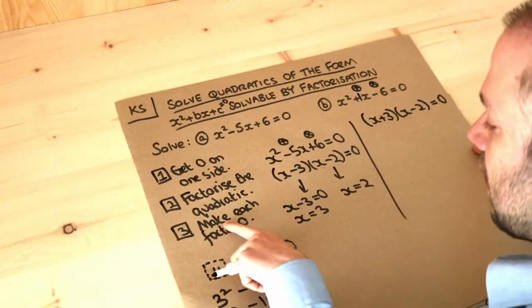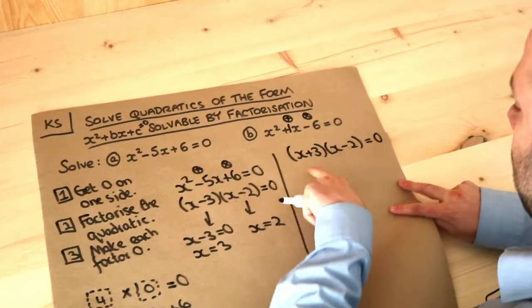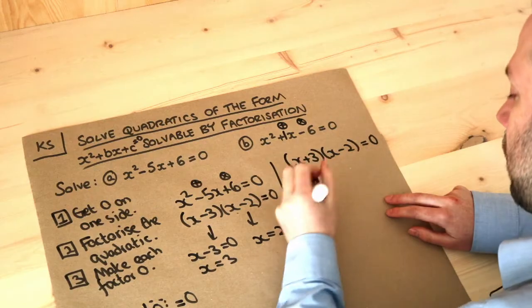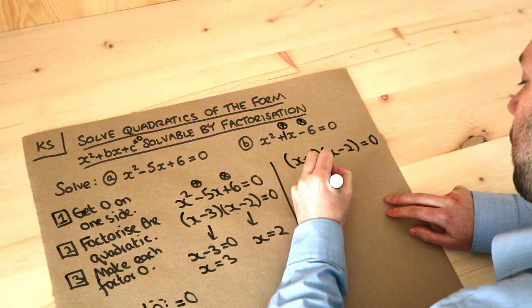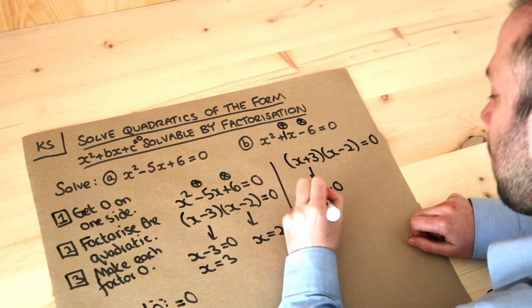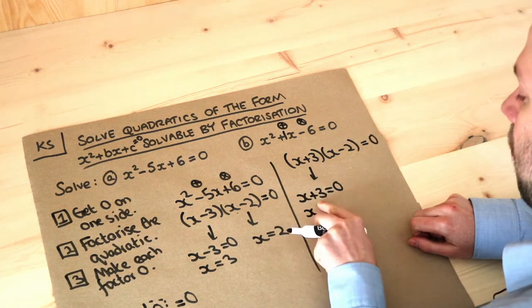And again the last step, we make each factor zero. So if it was the x plus three that was equal to zero, if we do it the full way, we could say well this thing x plus three is equal to zero. And what plus three is equal to zero? Well minus three plus three is equal to zero. We could subtract three from both sides, so we have x is minus three.